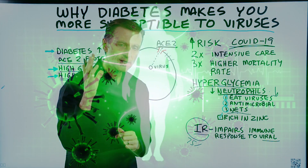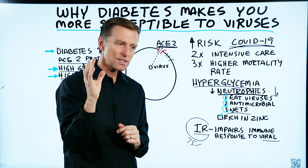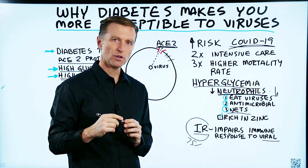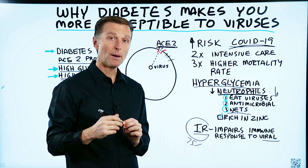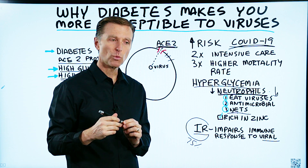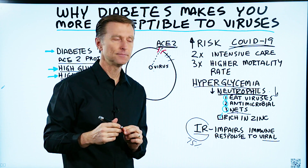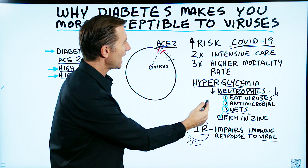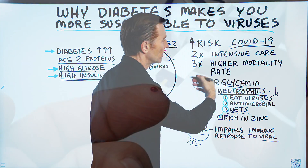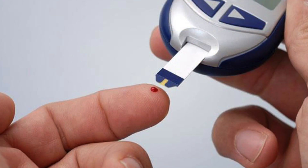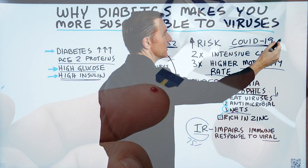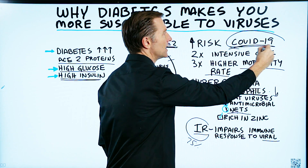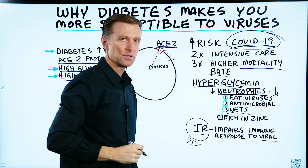Imagine sending your troops into battle without any weapons — that's what happens when your blood sugar is high. This is why a diabetic has a higher mortality rate with this virus and other viruses as well.